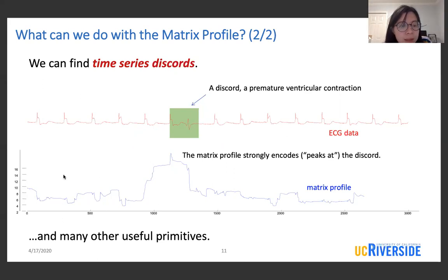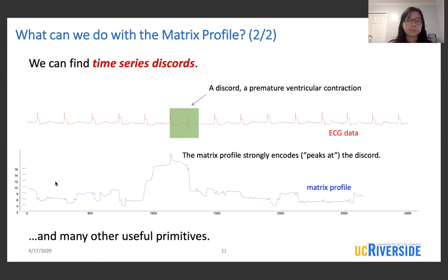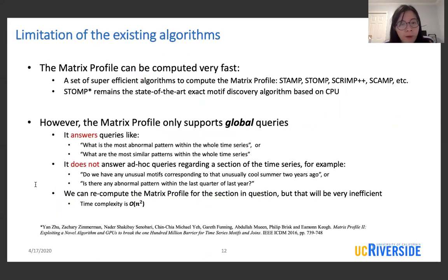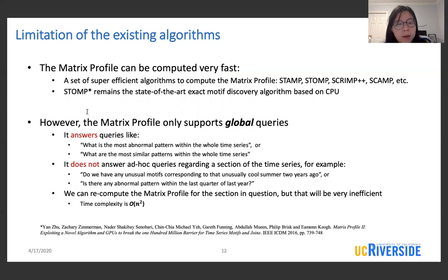We can use the matrix profile to discover many other useful primitives in the time series. The matrix profile can be computed very fast. Recently, there has been a set of super efficient algorithms to compute the matrix profile and they remain as the state-of-the-art exact motif discovery and discord discovery algorithms.